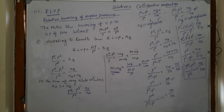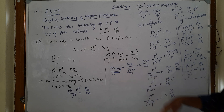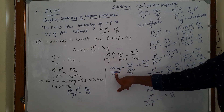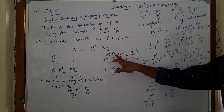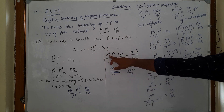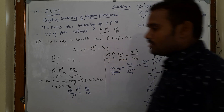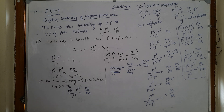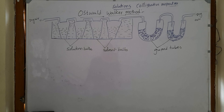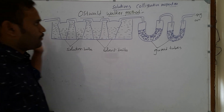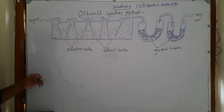This is about relative lowering of vapor pressure, used to find the molecular weight of an unknown solute. Among several methods to find RLVP, one famous method is the Ostwald-Walker method.